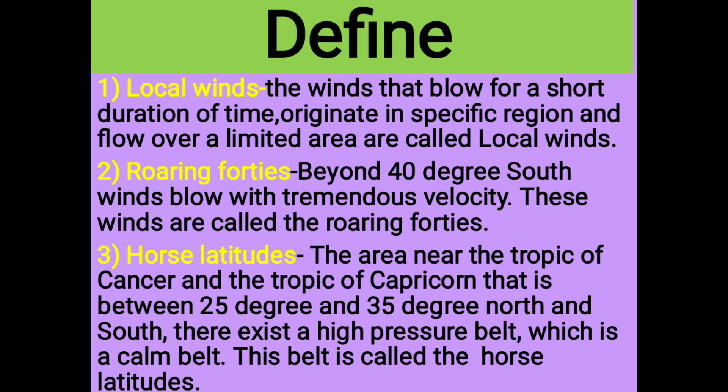Define: 1. Local winds - The winds that blow for a short duration of time, originate in a specific region and flow over a limited area are called local winds. 2. Roaring forties - Beyond forty degrees south, winds blow with tremendous velocity. These winds are called the roaring forties. 3. Horse latitudes - The area near the Tropic of Cancer and the Tropic of Capricorn, between 25 degrees and 35 degrees north and south, has a high pressure calm belt. This belt is called horse latitudes.